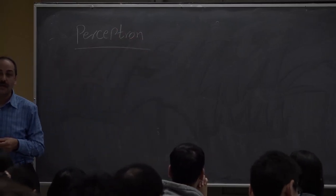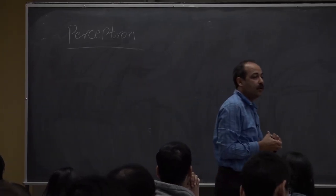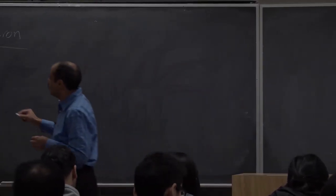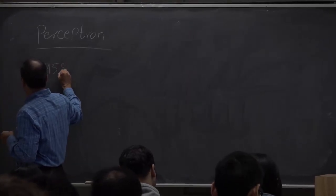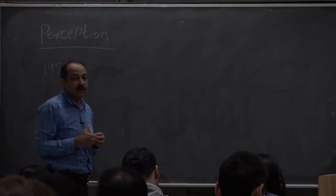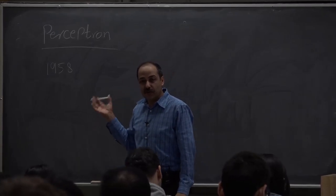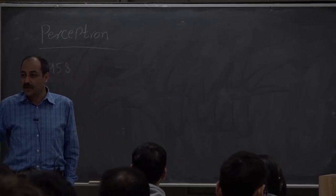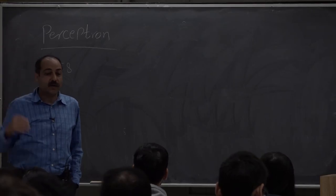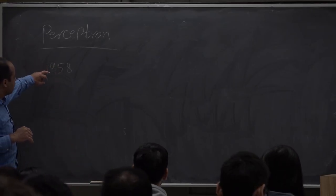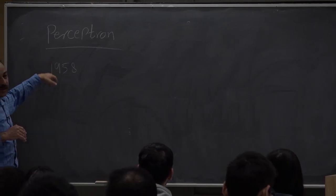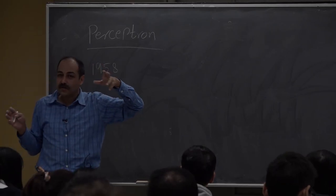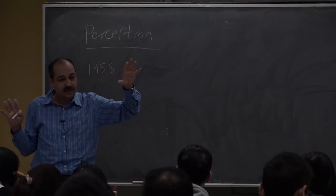We are going to move to a new algorithm: the Perceptron. Perceptron is quite an old method for classification — it was invented by Rosenblatt in 1958. It's a building block of a neural network. The history of neural networks and the Perceptron has always been up and down. When it was invented, it was a very big deal.